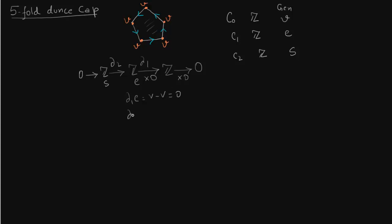For delta2, you take these edges, trace the entire clockwise movement, and sum the edges: E + E + E + E + E, that is E appearing 5 times. So we get 5E. Let me write this on the polygon itself — delta2 is multiplication by 5.